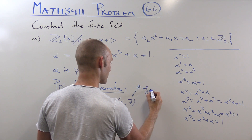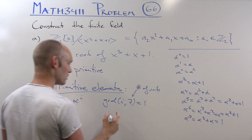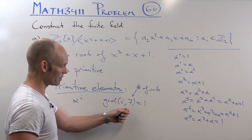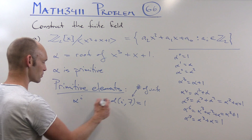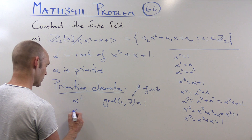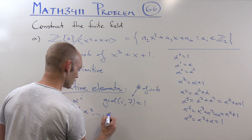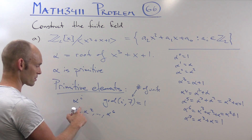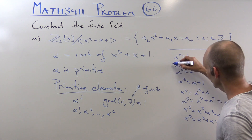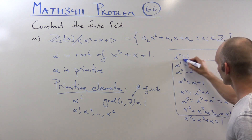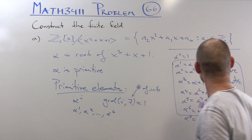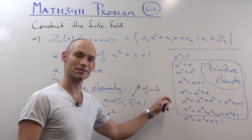So which values of i are valid? Everything from 1 to 6, because 7 is prime and every number from 1 to 6 is co-prime with 7. So in fact, every power of alpha — α¹, α², up to α⁶ — is a primitive element. So each of those 6 elements listed in the table is primitive.